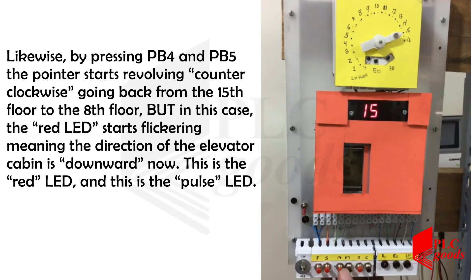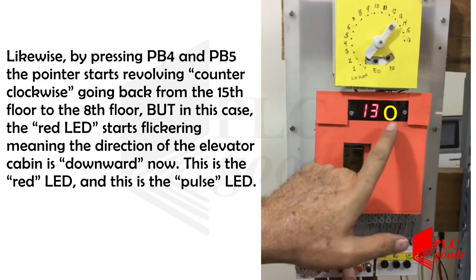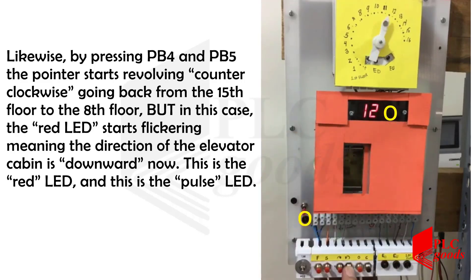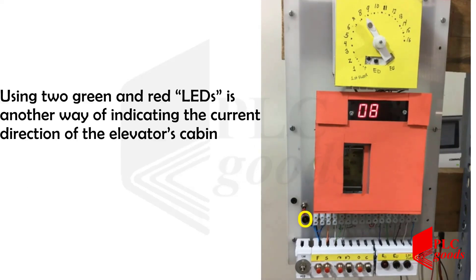Likewise, by depressing PB4 and PB5, the pointer starts revolving counter-clockwise going back from the 15th floor to the 8th floor. In this case, the red LED starts flickering, meaning the direction of the elevator cabin is now downward. Using the two green and red LEDs is another way of indicating the current direction of the elevator's cabin.